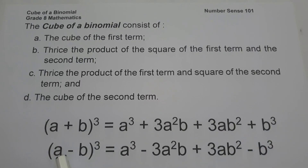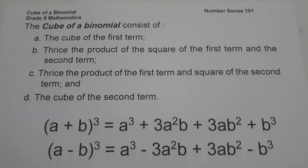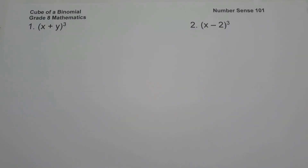For a minus b, the only difference is that the second term and the last term are negative. These are the basic concepts you need to remember in order to simplify the cube of a binomial. Let's start with the examples.